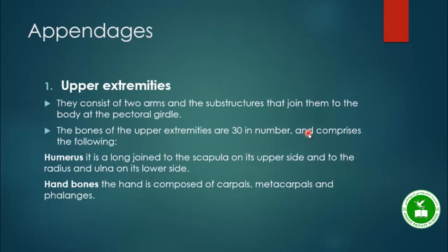The extremities are the limbs of the human body. They are generally divided into two groups: the upper extremities and the lower extremities. The bones of the trunk and the extremities together make up the appendicular and axial skeleton.